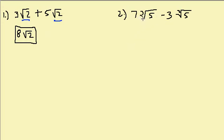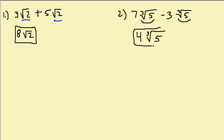Let's look at this one. We've got 7 cube root of 5 minus 3 cube root of 5. You can see that the radicals are the same, so 7 minus 3 is 4 times the cube root of 5.